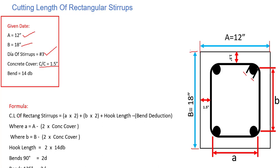Let's look at the formula for how we can find out the cut length of a rectangular stirrup. It is small a times 2, plus small b times 2, plus hook length, minus the bend deduction.